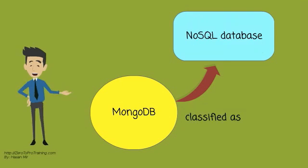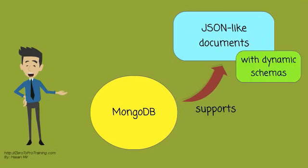It is classified as a NoSQL database. MongoDB avoids the traditional table-based relational database structure in favor of JSON-like documents with dynamic schemas.